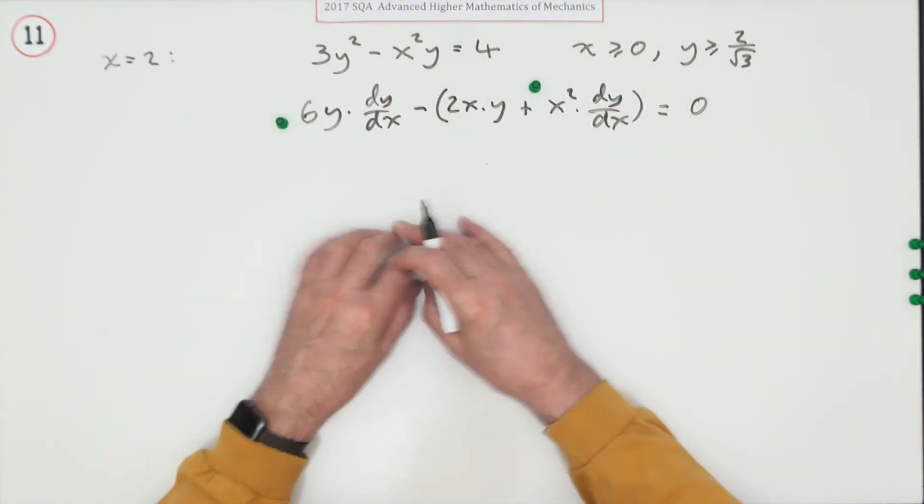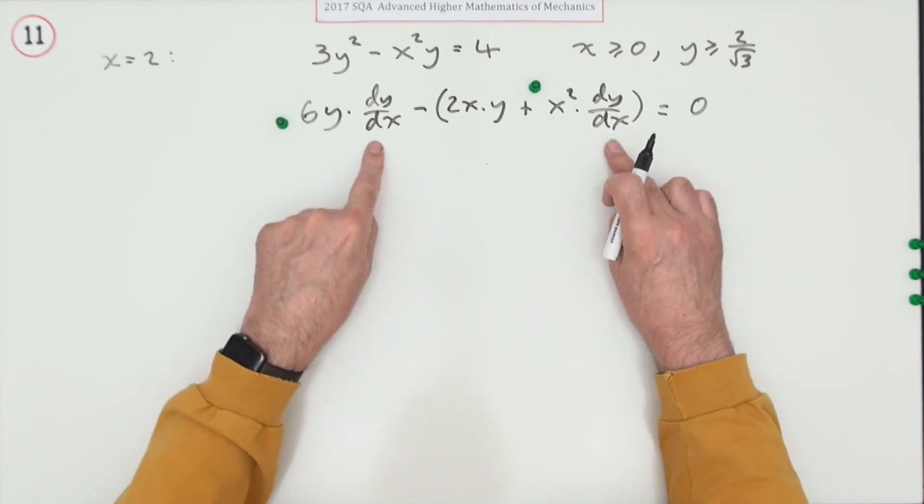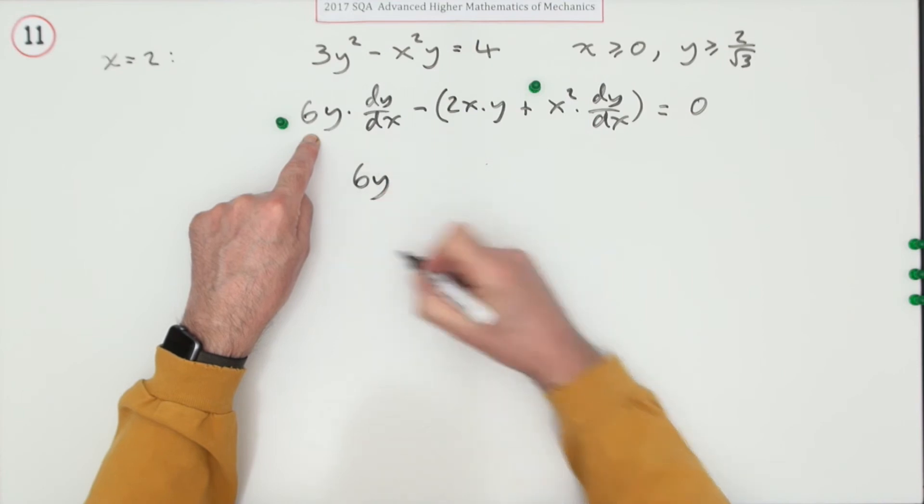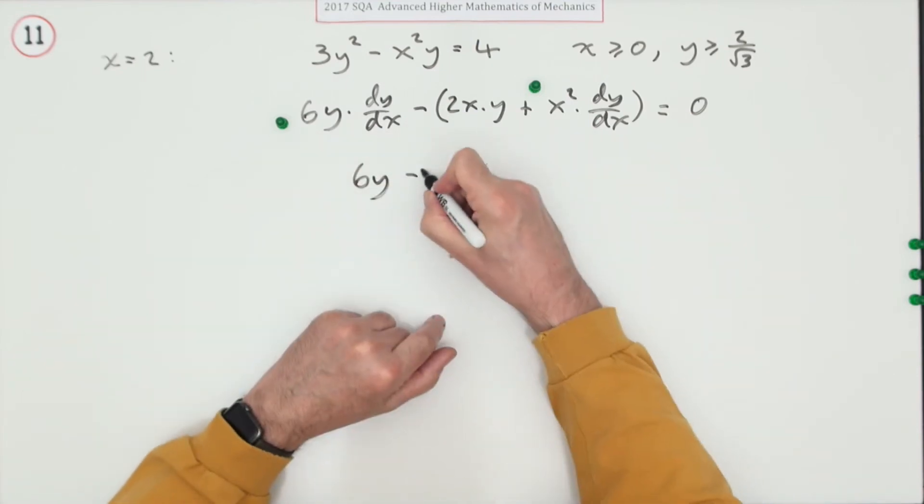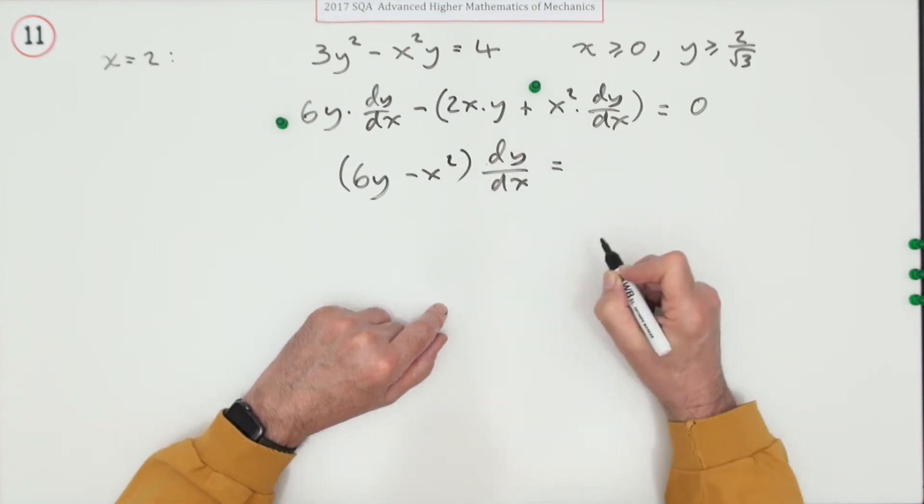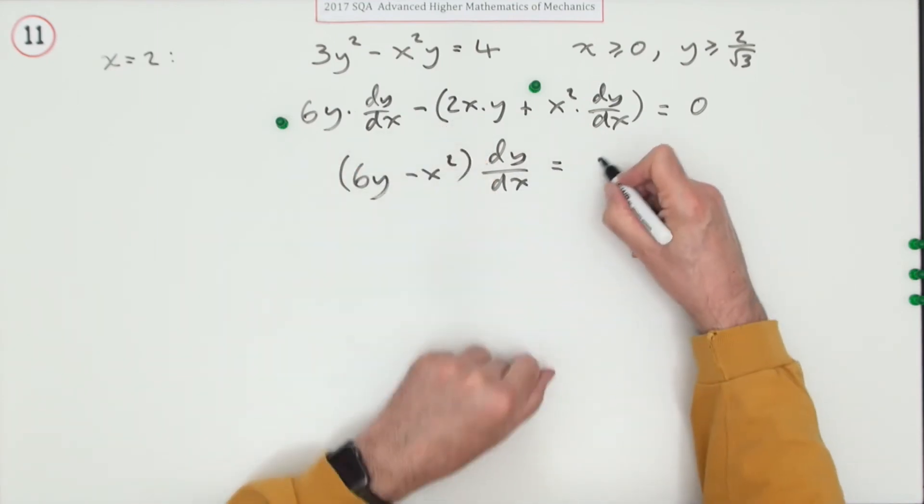The next mark is for bringing it all together. There are two terms in dy/dx: 6y minus x^2, giving (6y - x^2) dy/dx. The -2xy term moves across as +2xy.